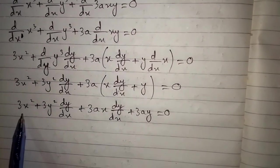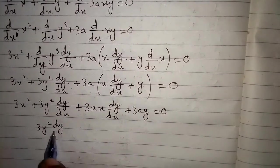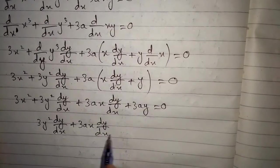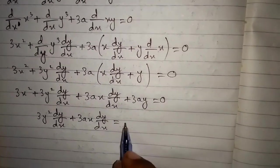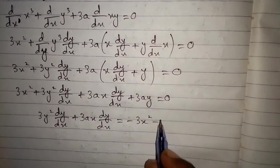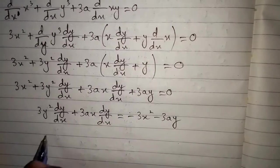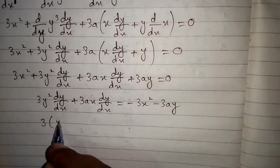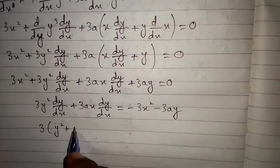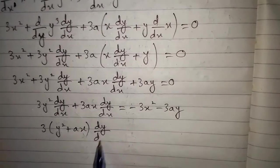We move the terms without dy/dx to the right-hand side and keep terms with dy/dx on the left. Then we take 3 and dy/dx common, writing the expression as 3(y² + ax)·dy/dx.